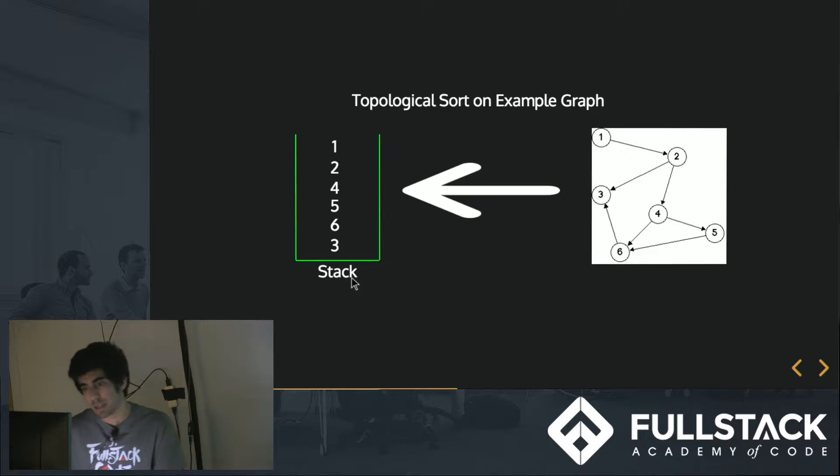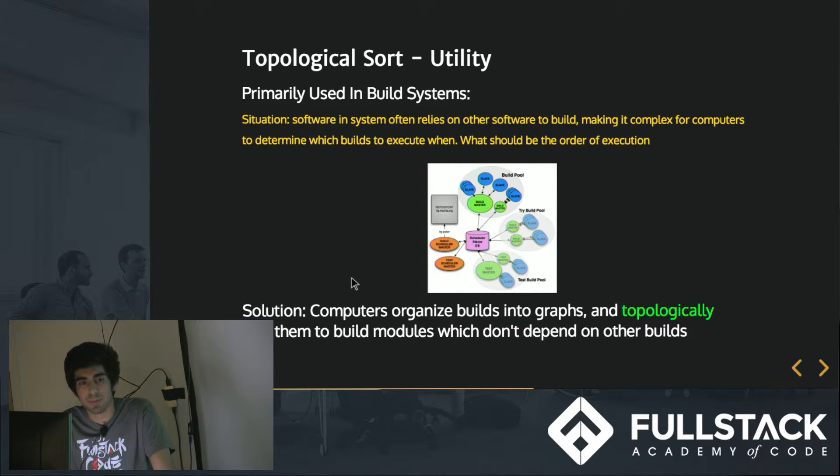So a huge use of topological sorting is in build systems because whenever we run our code on the command line, a lot of times our code relies on many parent nodes, and those nodes are basically modules. And if one module is supposed to complete before the other does